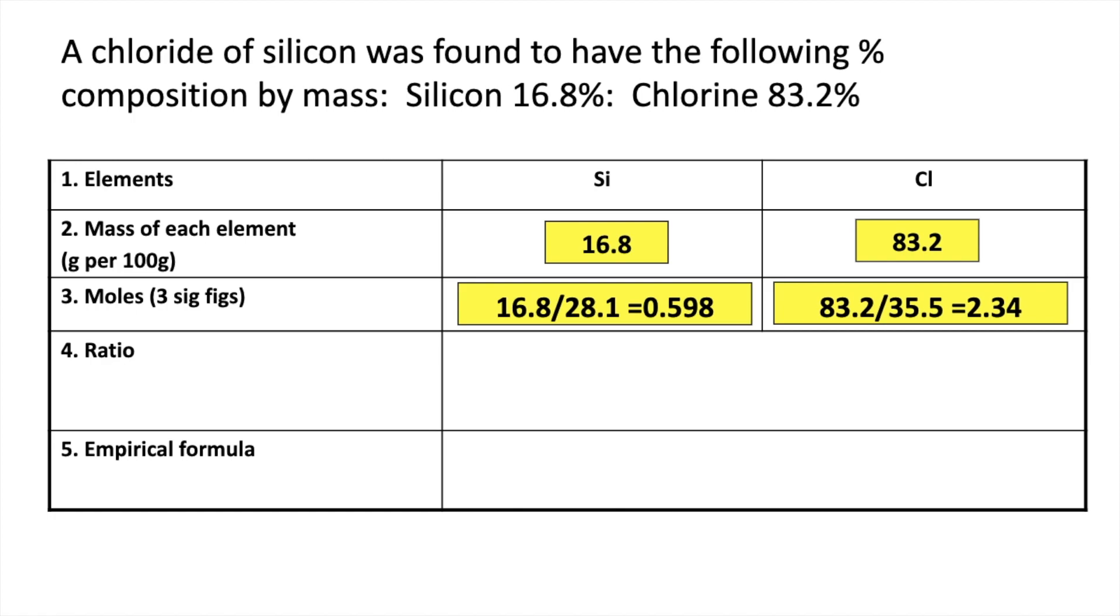Then we divide by the smallest of the moles, obviously that one there, and we get a 1 to 3.92 ratio. Because this is so close to the next whole number of 4, it's okay to round. So it would be SiCl4 for that one.